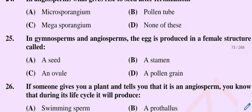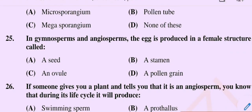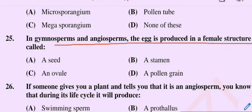Question number 25. In gymnosperms and angiosperms, the egg is produced in a female structure called. Option A: A seed. Option B: A stamen. Option C: An ovule. Option D: A pollen grain.